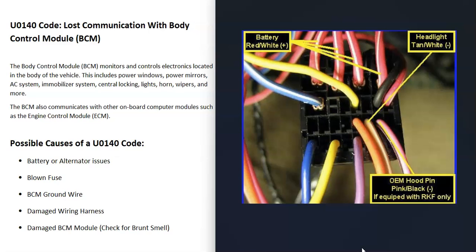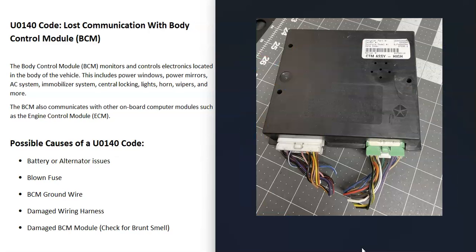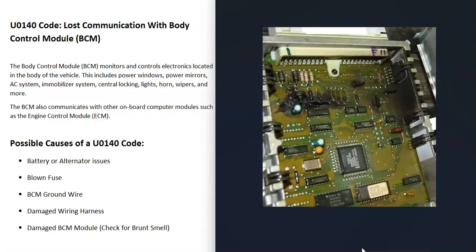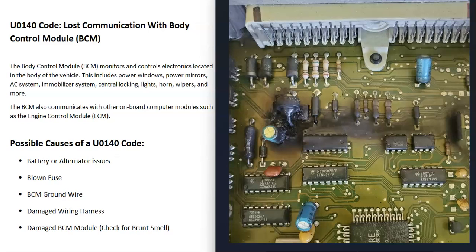The next thing that could cause this problem is that the body control module is just damaged — there's some kind of issue going on with it. Quite often when this happens, there can actually be burn marks on them, or one of the capacitors blew up or something like that, and you can actually see the damage or smell it. So if you locate that body control module and think that it's bad, try to check to see if you smell a burnt smell. While these can fail without visible damage, sometimes they do show it. If you can smell a burnt smell, then that body control module has probably failed.